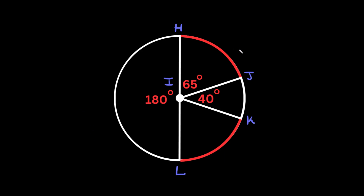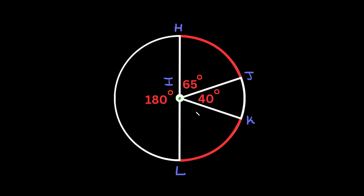Here's the next one. We want to check if these two arcs are congruent. The two arcs are on the same circle, so they have the same radius. Now we just need to check if they have the same angle. This one is 65 degrees, but the other one is missing. We can find it because all the angles inside a circle have to add up to 360 degrees.